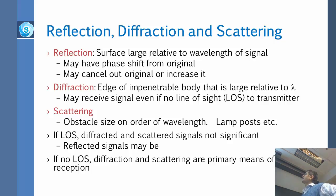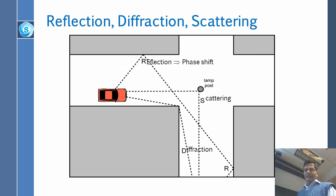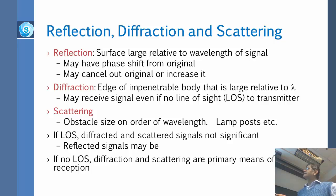So reflection surface is large and related to the wavelength. So when we say thin or thick, it is related to the wavelength. So related to the wavelength of the signal, it is reflected, and may have a phase shift, may cancel out original or increase it. So because of the phase shift, it could just cancel out the original signal, so you may get a zero. It could increase it. So diffraction, if the edge is large, related to lambda, and may receive signal even if there is no line of sight. So even if you are not in the line of sight, you can get this signal. So suppose you are here and the car is here, you can't see it. But you get it by diffraction. And scattering, when the obstacle size is on the order of the wavelength, lamppost, etc.